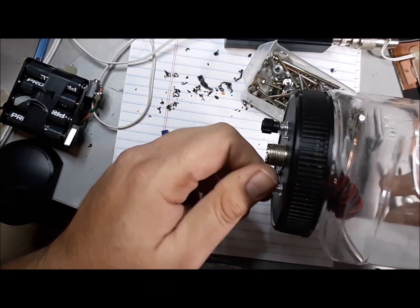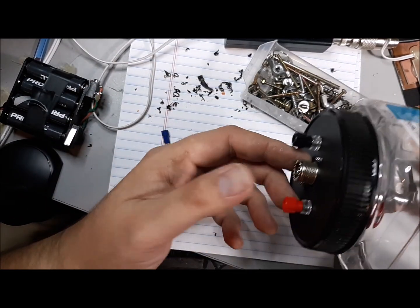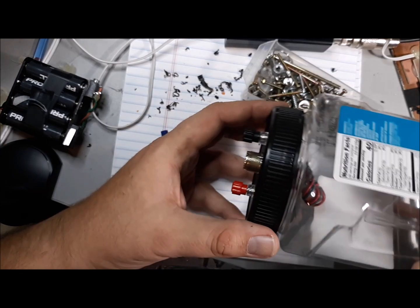There we go. So we have our 9 to 1 balun in a container. Happy times. Now we got to hook something up and get it tuned. I'm going to go put this up and then once I put it up I'll show you what I did. We'll be back in just a moment.